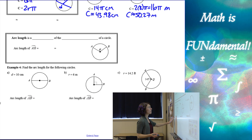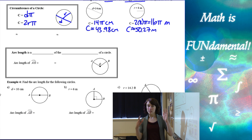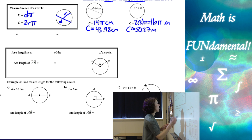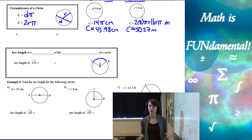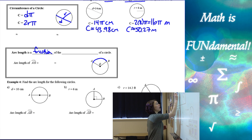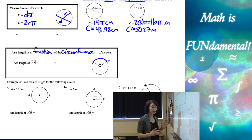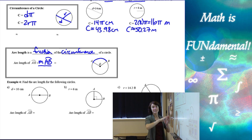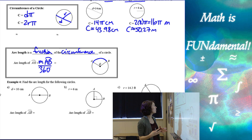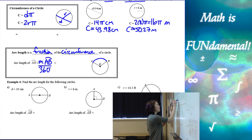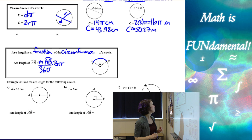Next we talk about arc length. We've talked about how arcs are part of the circle and how to find the length of the whole circle — but what if we only want the length of one arc? Arc length is a fraction of the circumference of the circle. That fraction is the measure of arc AB divided by 360, multiplied by the full circumference, which is 2 pi r — or pi times diameter, depending on whether you're given the radius or diameter.